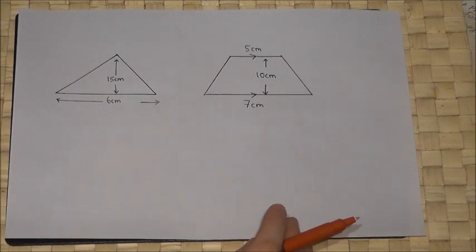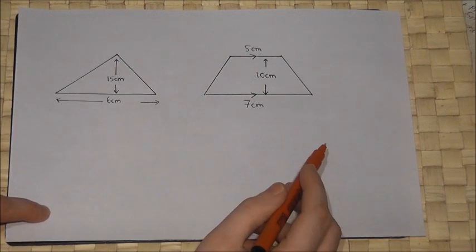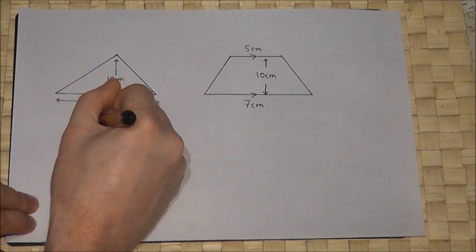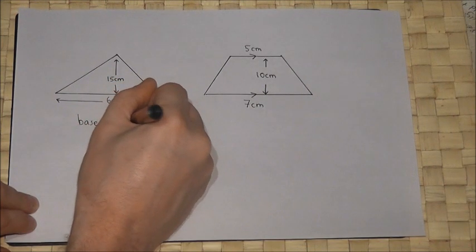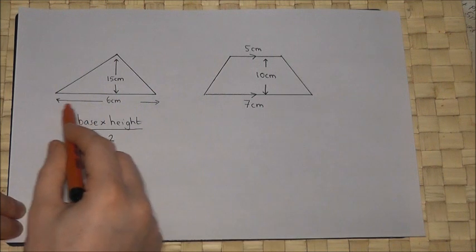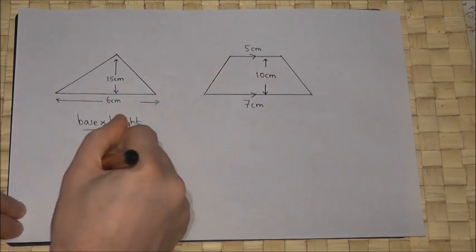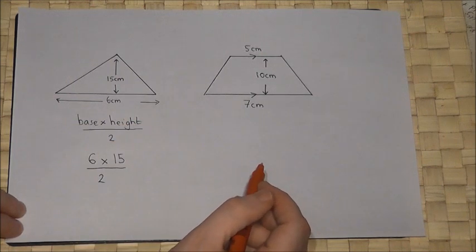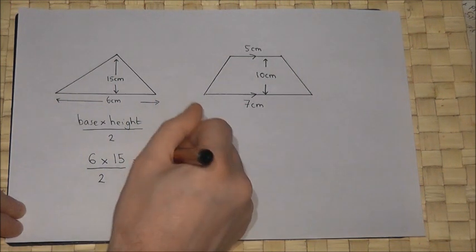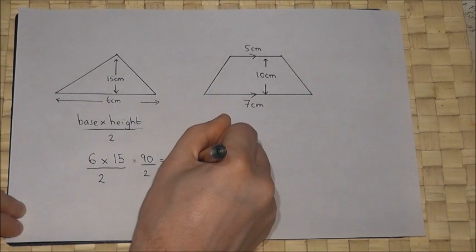In this video we review a range of areas and perimeters of lots of shapes. In the first examples we look at a triangle and a trapezium. For a triangle the area is always given by the base times the height, all divided by 2. In this case the base is 6, the height is 15. So 6 times 15 is 90, divide by 2, and a half of 90 is 45. The units for area in centimetres will be centimetres squared.